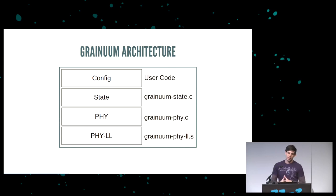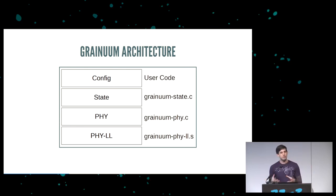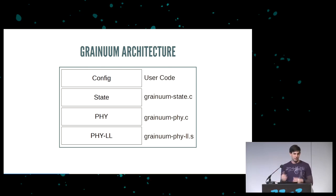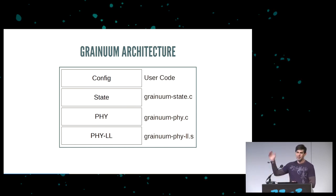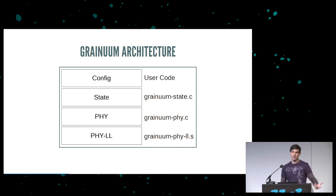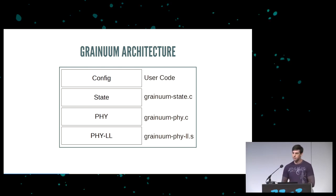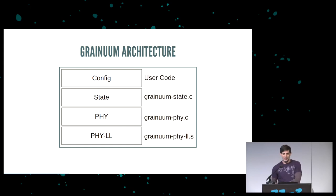Grandium is the name of the project. It has roughly this architecture. At the top you have user code — things like descriptor callbacks and buffer handling. Below that is the state layer, GrandiumState.c. Below that is the PHY handling all low-level PHY stuff, and below that is PHYLL, the hardware-dependent implementation. Everything except PHYLL is written in C, which means it's portable — you could port this to something slower than an M0 Plus 48 MHz. Now let's work our way up through the basics of USB.